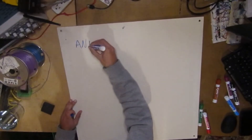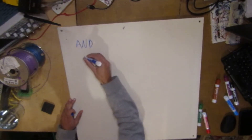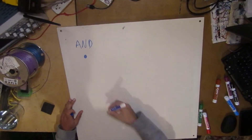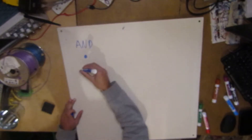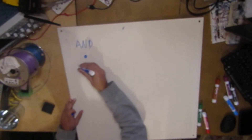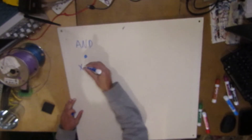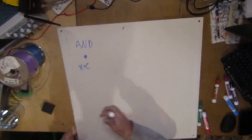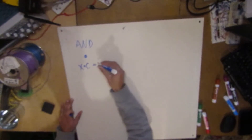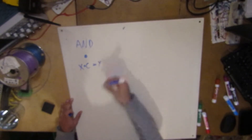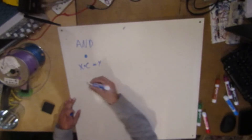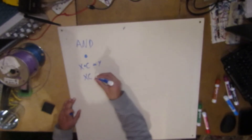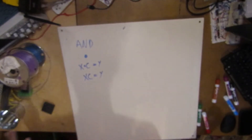So remember we have AND, and we give AND this symbol, just a dot. So we have some variable like x dot c, so this would mean x and c go through the logic gate and you get some sort of output, let's say the output is y. You can also just represent it like this: x c equals y — same thing in Boolean algebra.